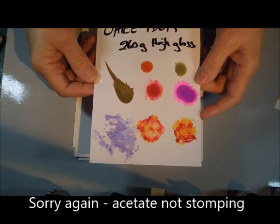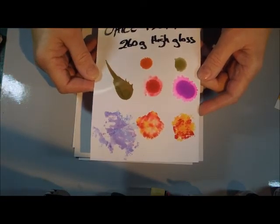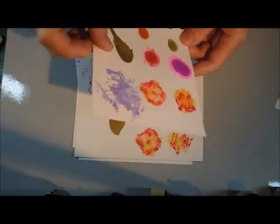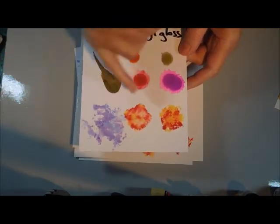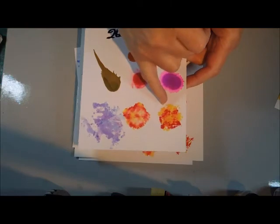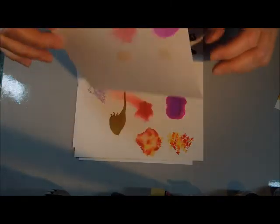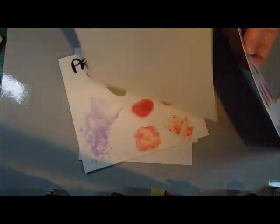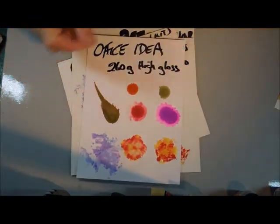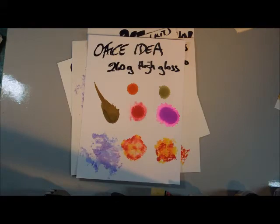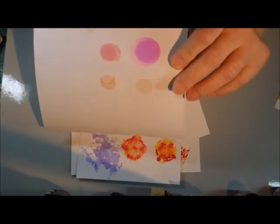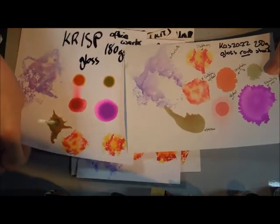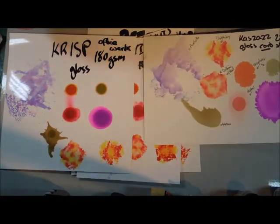And this one, Office Idea, I'm not sure where that came from, but that's what was written on it. Office Idea 260 gsm. It's closer to being cardstock. Again, the foam applicator, it's lovely and vivid. It has gone through a little bit on these. Oh, I didn't check this one, did I? No, that one hasn't gone through. And then the Office Works one has gone through. And it has on the glossy cardstock on the big blobs. So the really wet ones went through, the others didn't.